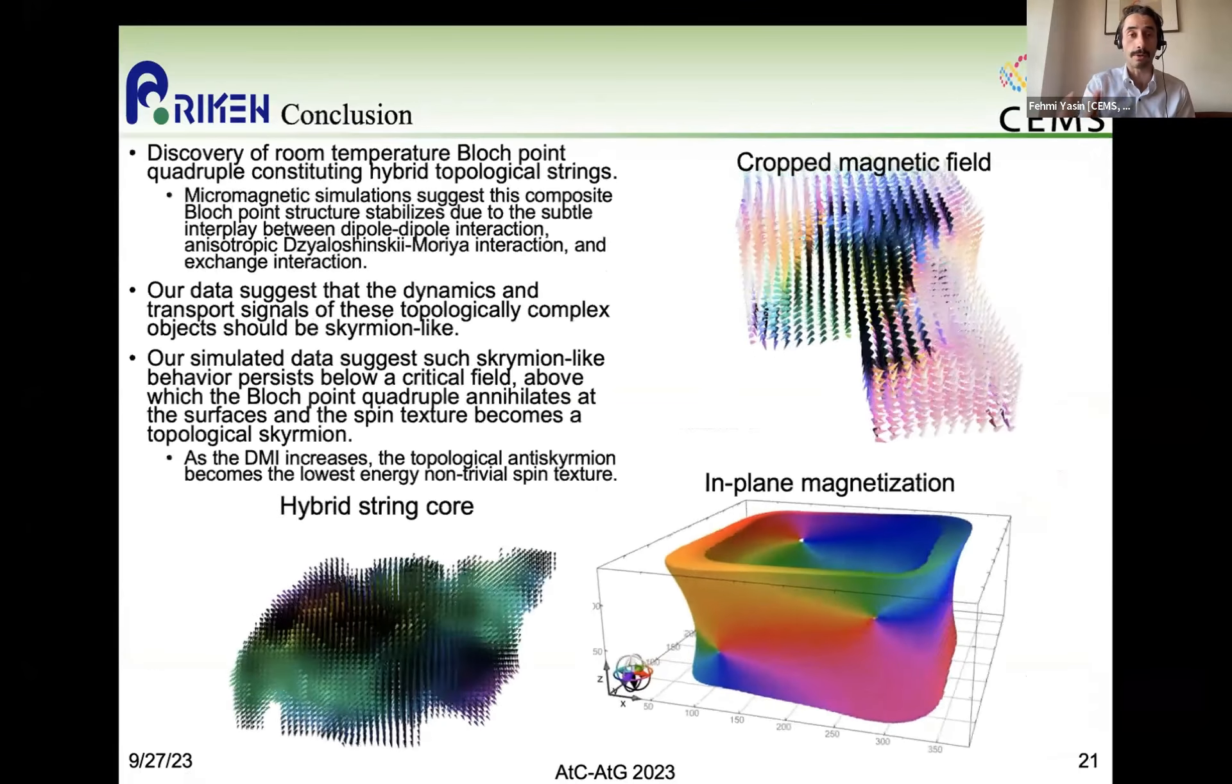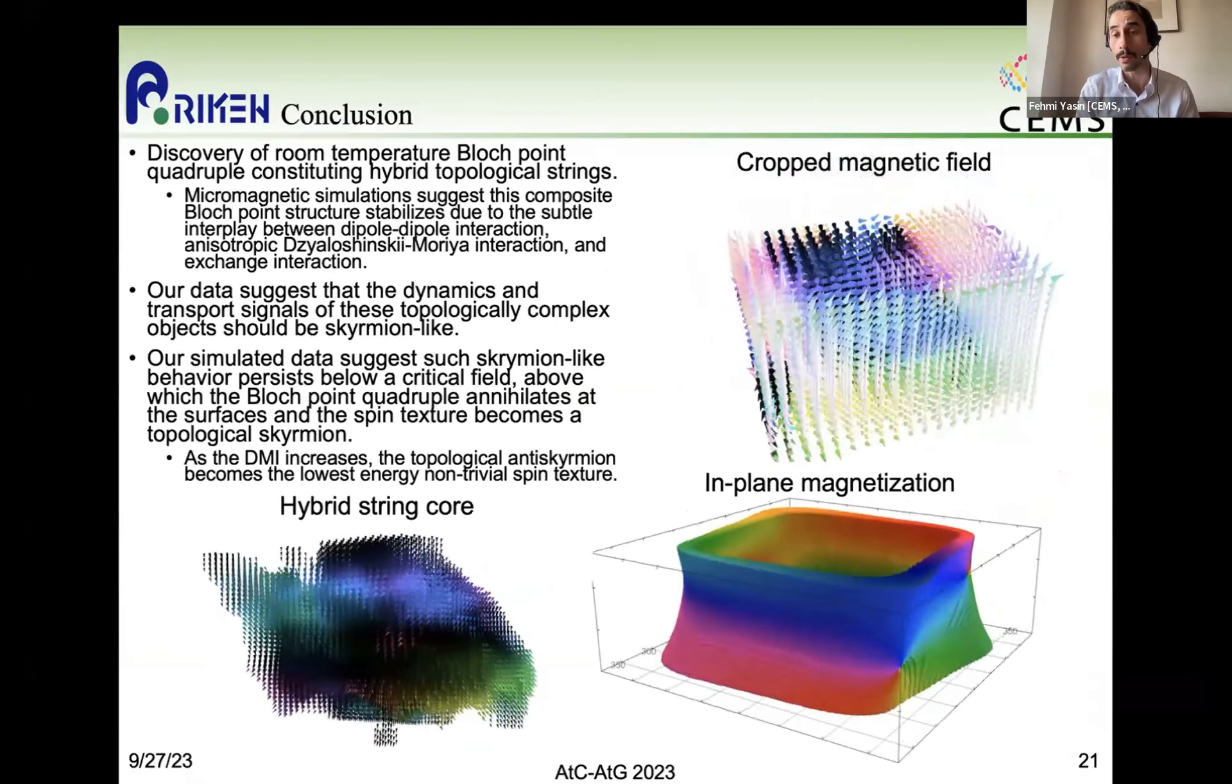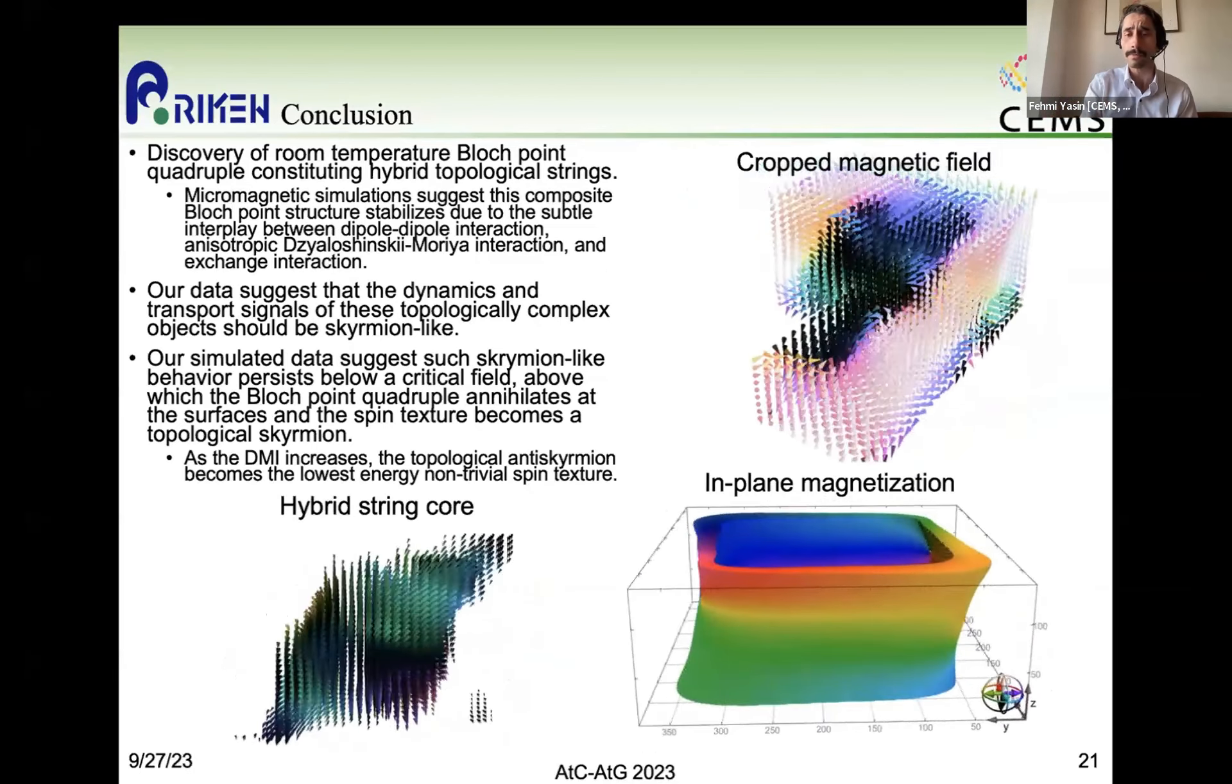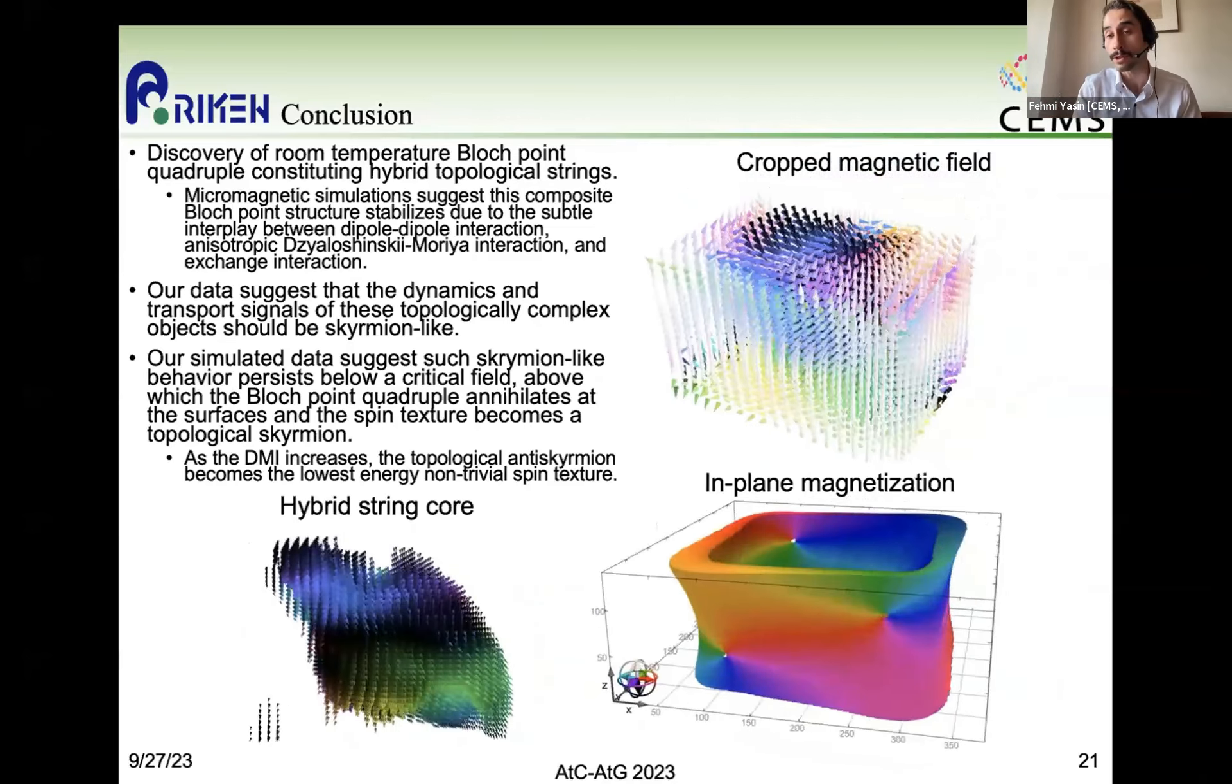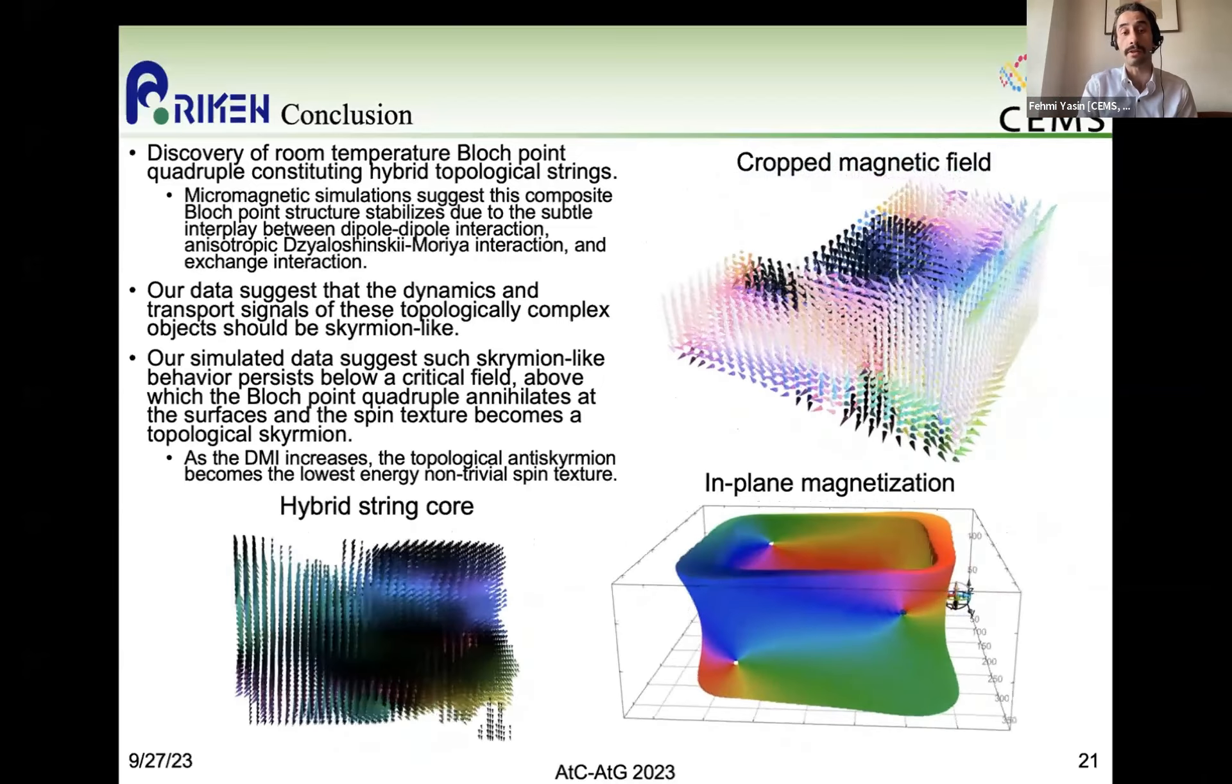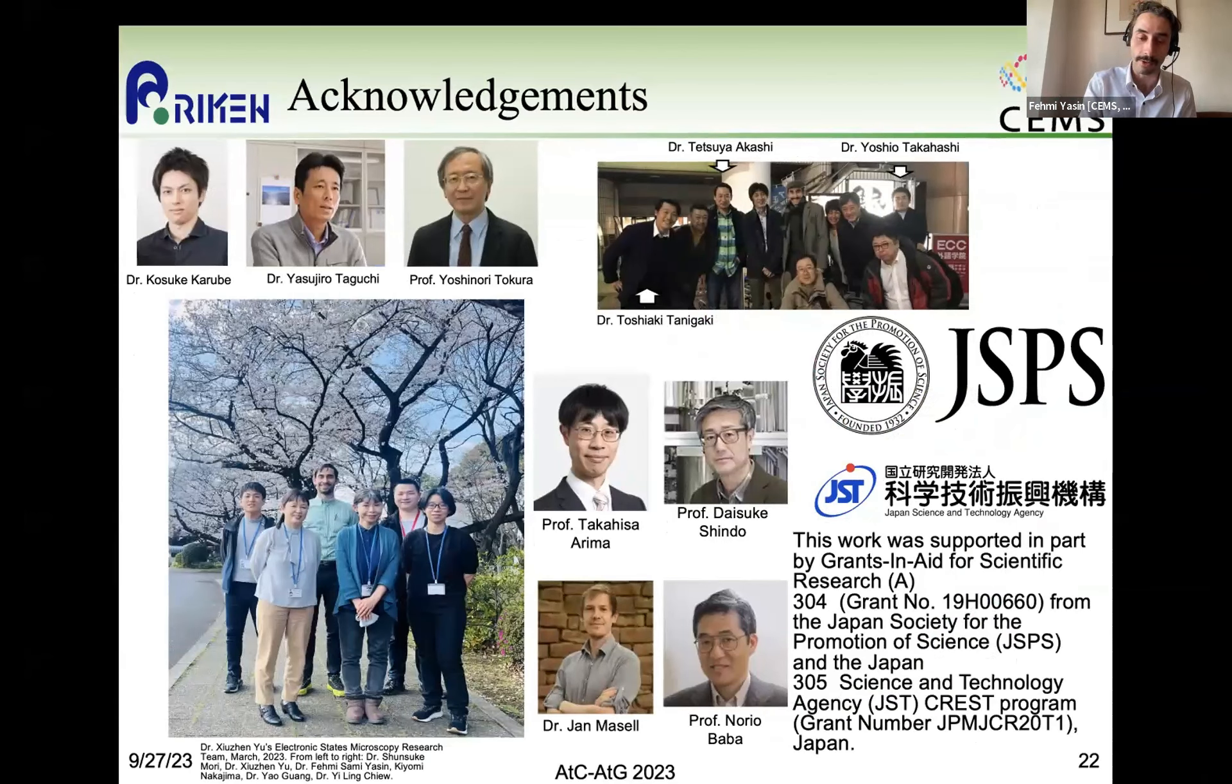So now I'll conclude my talk. I mentioned that we've discovered this Bloch point quadrupole that constitutes these hybrid string, topological string textures. And we are able to tune the thickness average topological charge of these spin textures using, for example, a magnetic field or thickness of the device. And with that, I'd like to thank all of my collaborators and ask if there are any questions. I'm happy to take them. Thank you so much.